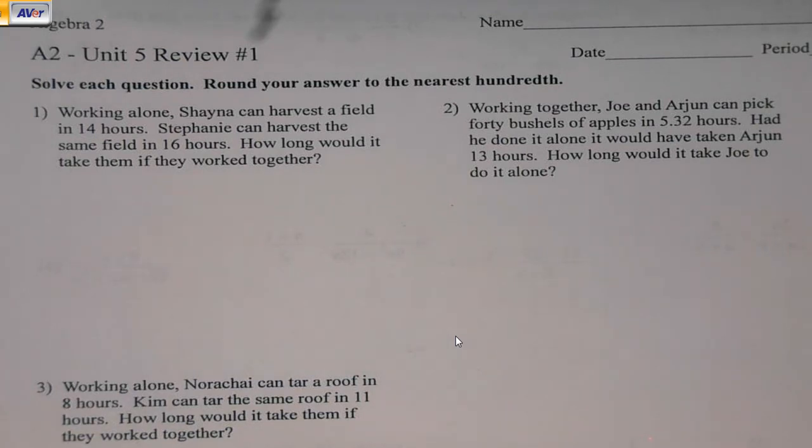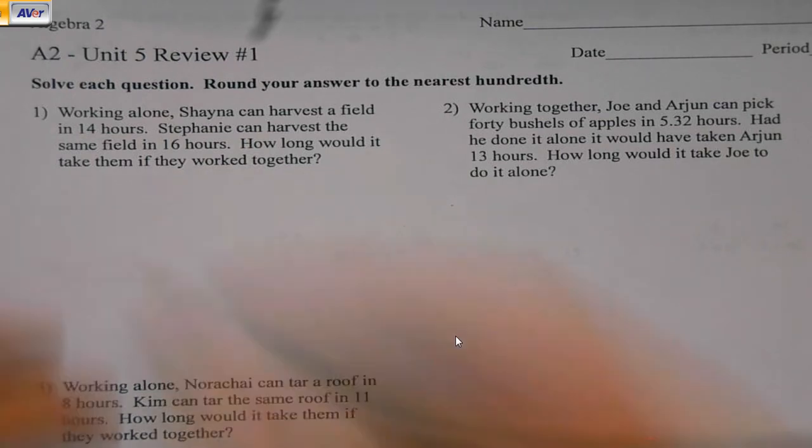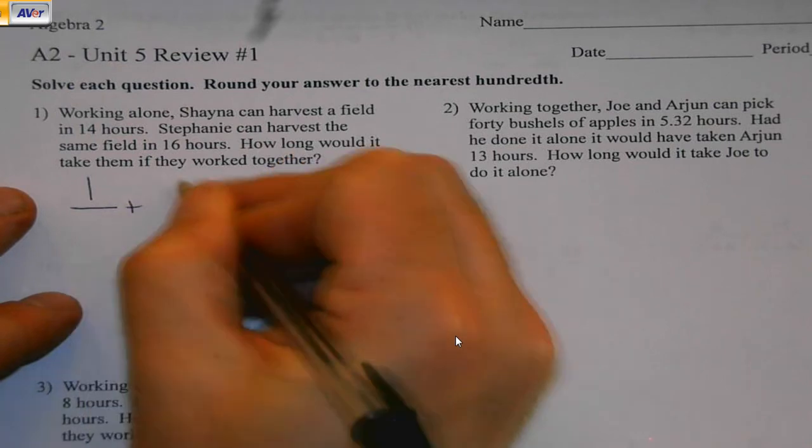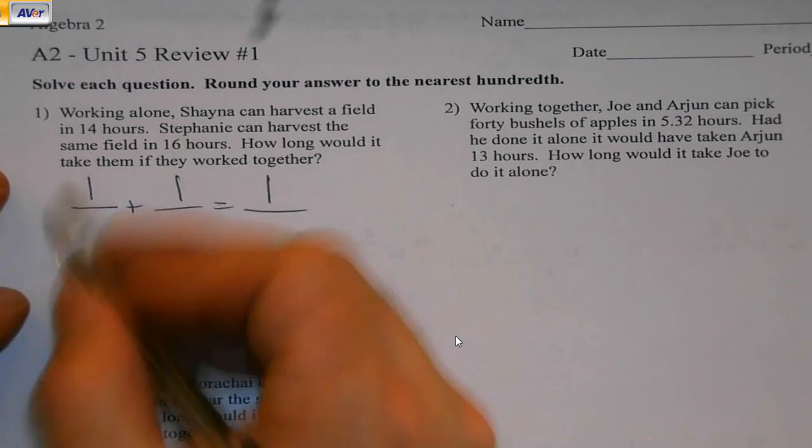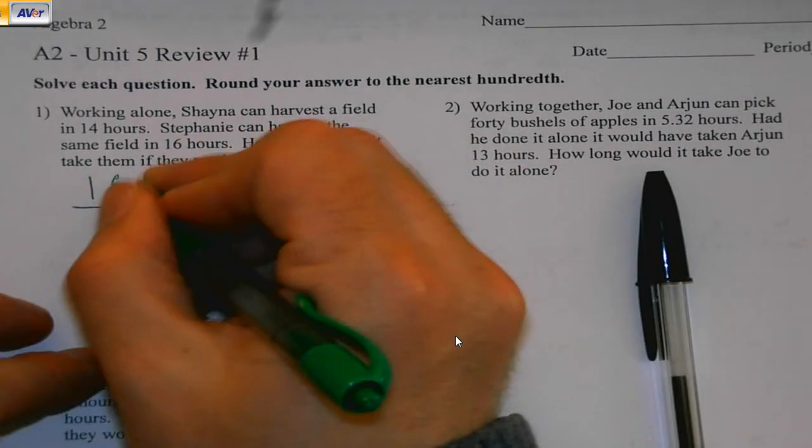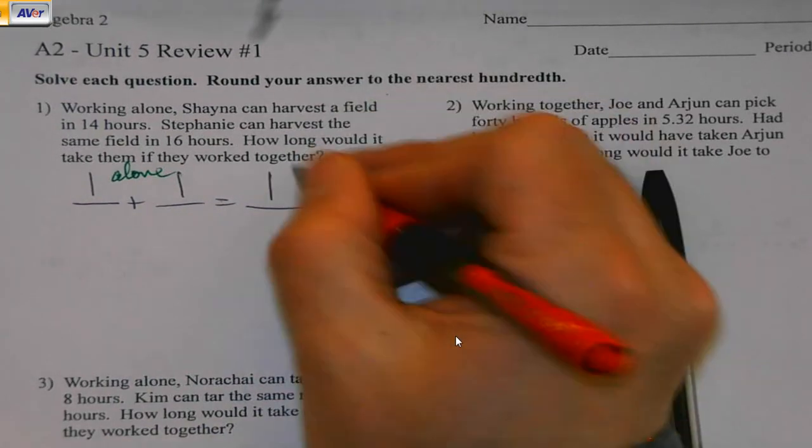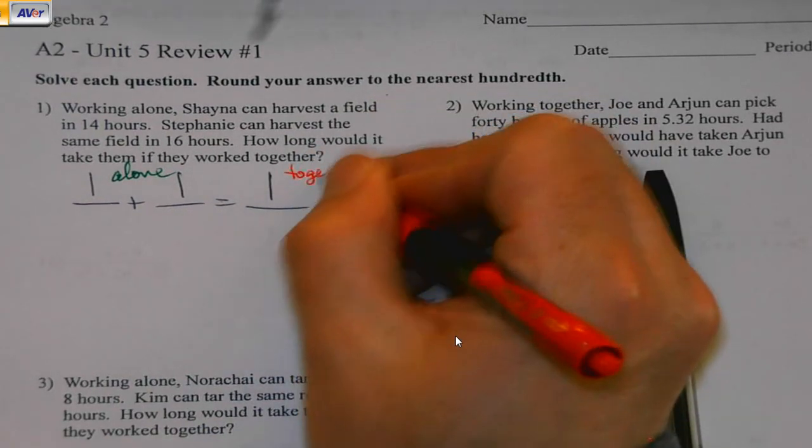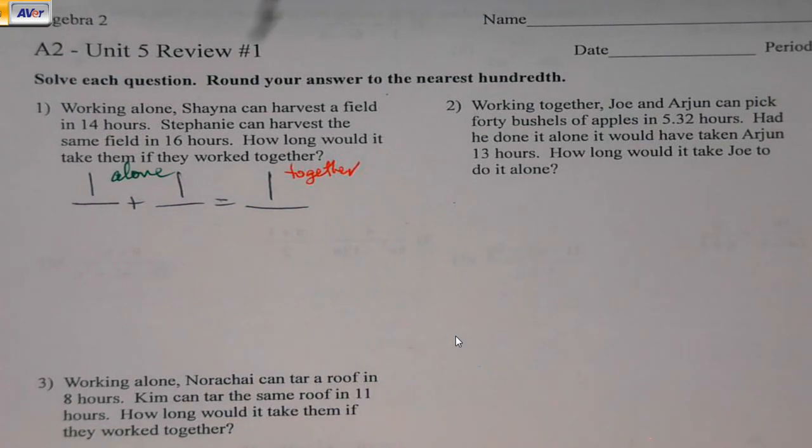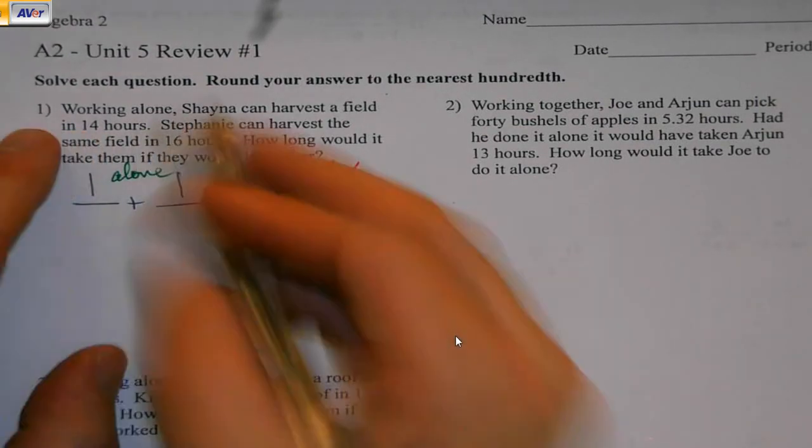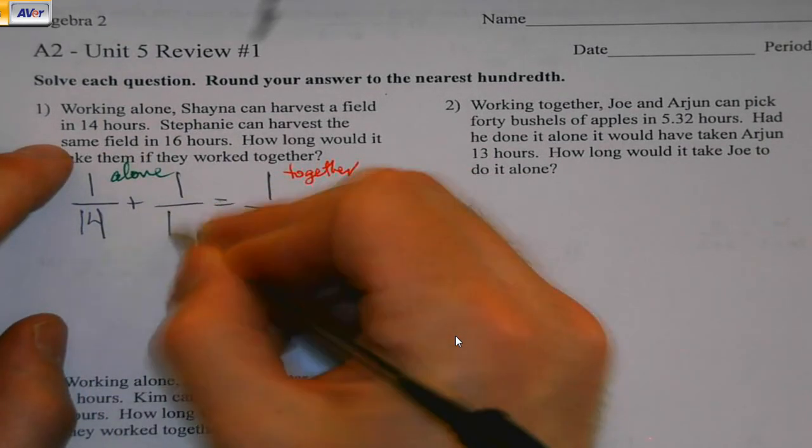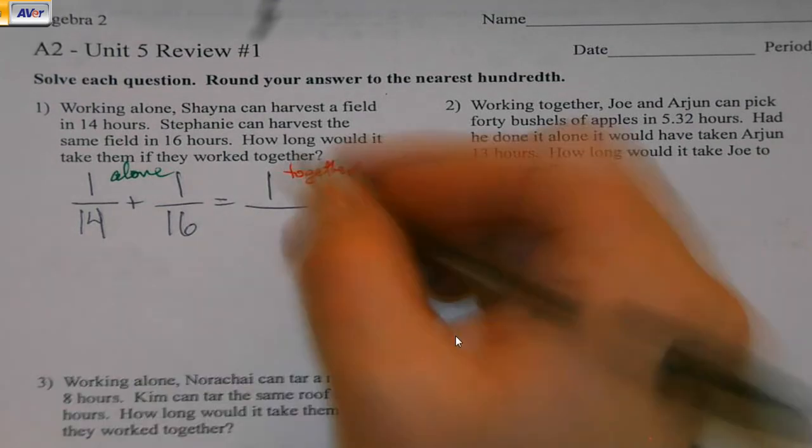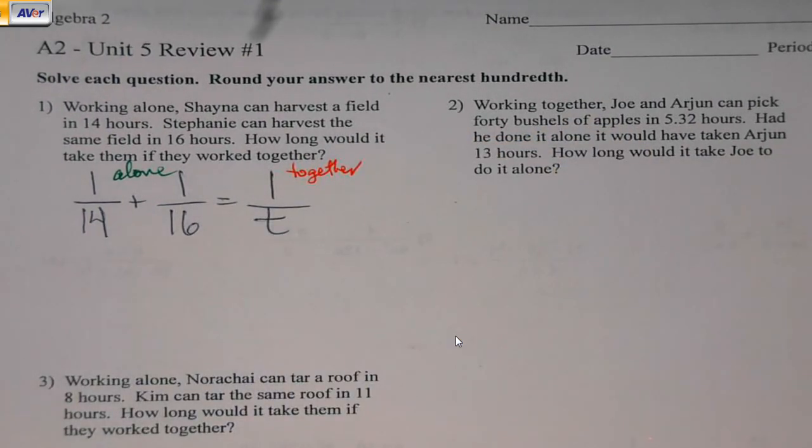So number one, working alone, Shayna can harvest a field in 14 hours. I noticed it's a work problem right away. This side over here is going to be the side where people are working alone. This side over here is going to be where people are working together. Stephanie can harvest the same field in 16. There are two people working by themselves.